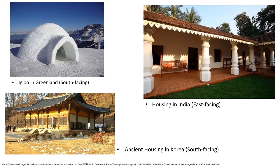Similarly, igloos in ice and snow-covered Arctic regions are constructed south-facing. Houses in intermediate latitudes such as in South Korea are also south-facing. An exception is houses in tropical and subtropical regions — for example in India, where high temperatures are to be avoided, houses are rather built with east-facing entrances.